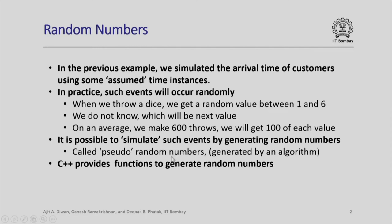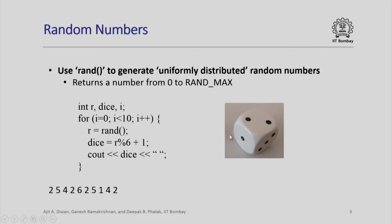C++ provides functions to generate such random numbers. The function rand is used to generate uniformly distributed random numbers. Every time you call this function, it will return one number between 0 and a parameter called RAND_MAX. This is essentially the largest positive integer number that can be represented on the machine — a very large number. Any time you generate a number, you will get any number between 0 and such a large number.